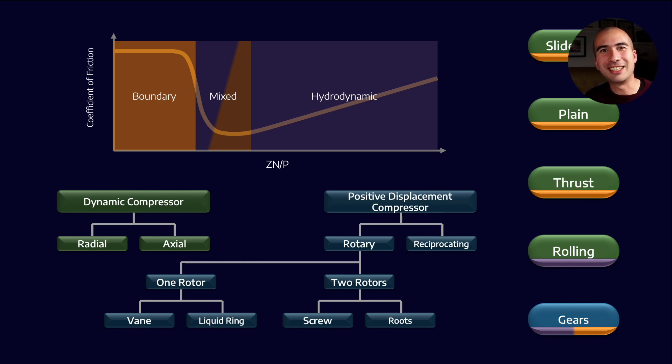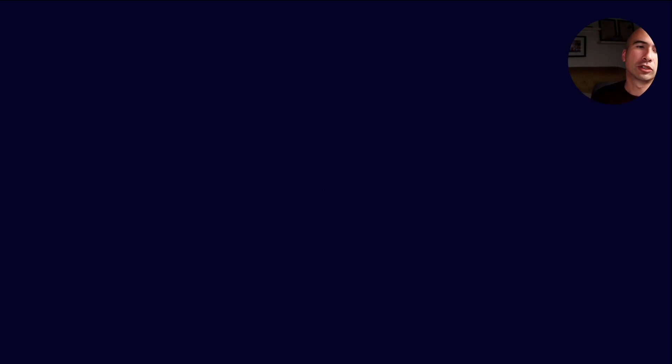Then we also need to consider the chemistry of it. Remember that, broadly speaking, as we go down this list, we start with the base oil, and then generally when we are formulating industrial lubricants, we add rust and oxidation inhibitors, and then if necessary we add anti-wear agents, and then we add EP agents if necessary, and then we add detergents if they're necessary. As you go from the top to the bottom, you're going from lesser to more additized.